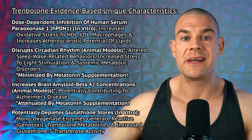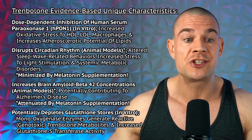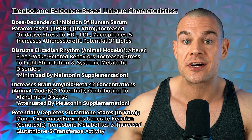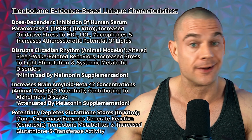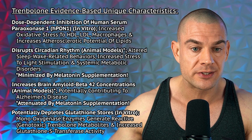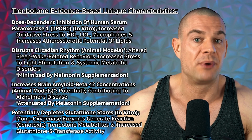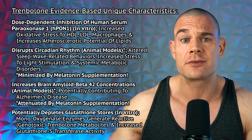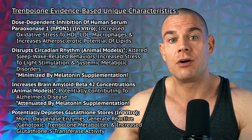Trenbolone shows a dose-dependent inhibition of human serum paraoxonase-1 enzymes, which increases oxidative stress to high-density lipoprotein, low-density lipoprotein, and the macrophages that break down these lipoproteins — increasing the atherosclerotic potential of lipids. This is a little worrying, but it's likely the same case for all other steroids, albeit not yet investigated in this context.